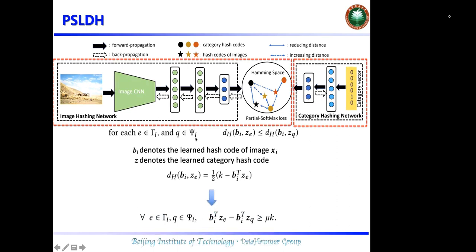Thus, in order to make the learned hash code preserve the labeled semantic information sufficiently, the learned hash code B_i should satisfy this inequality.